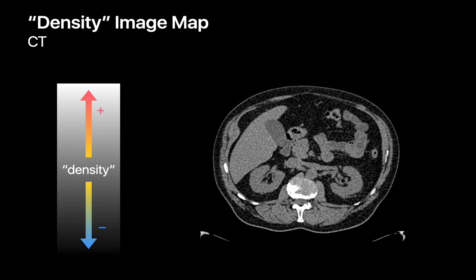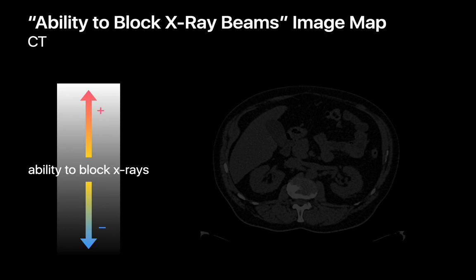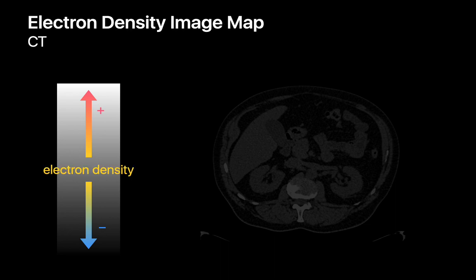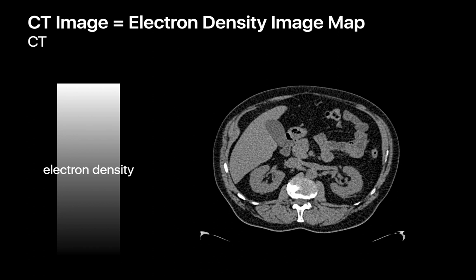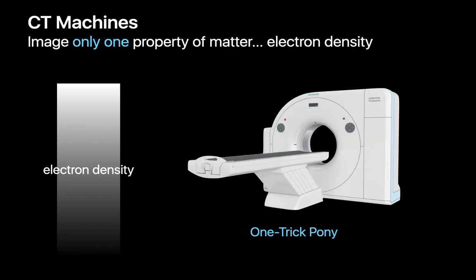Most medical professionals and laypeople intuitively grasp that the grayscale spectrum used to paint CT images is a representation of density, which is almost true. We say almost because it's actually a representation of different tissues' abilities to block X-ray beams, which is directly tied to their electron density — basically how many electrons are packed within a given space. It just happens that a lot, but not all of the time, denser tissues tend to have higher electron density. So CT images are basically electron density maps.